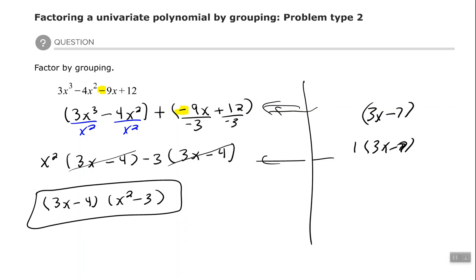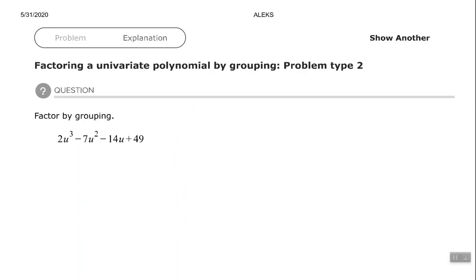Alrighty, let's look at one more. Alright, so we have 2u to the third minus 7u squared minus 14u plus 49. So again, don't have a common factor all the way across. I do notice that minus on that third term. So I know it needs to follow in the parentheses with that 14u. Like so.